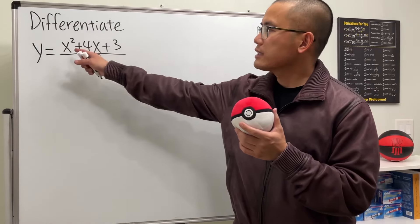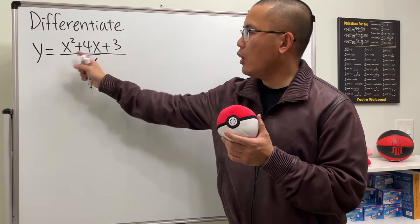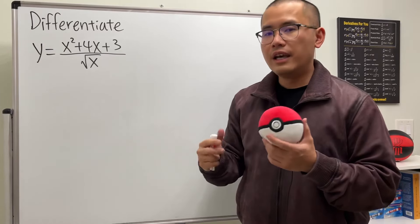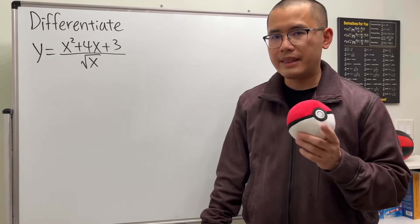Let's see how we can differentiate x squared plus 4x plus 3 over square root of x. And you know, we are going to use the power rule, but not now.